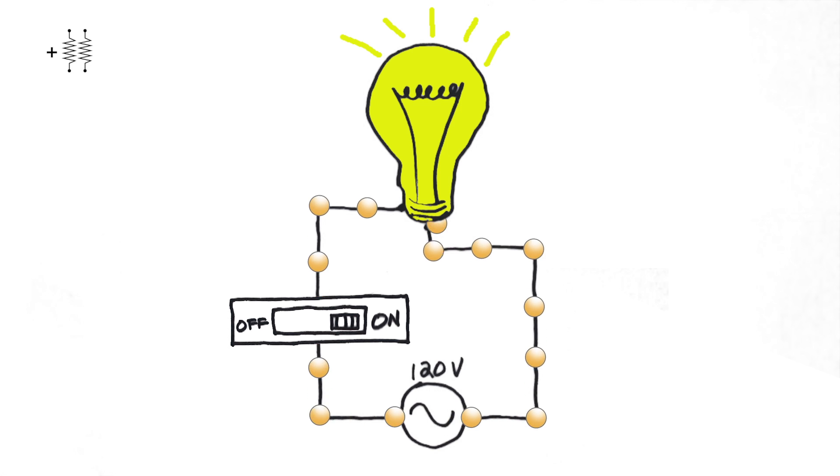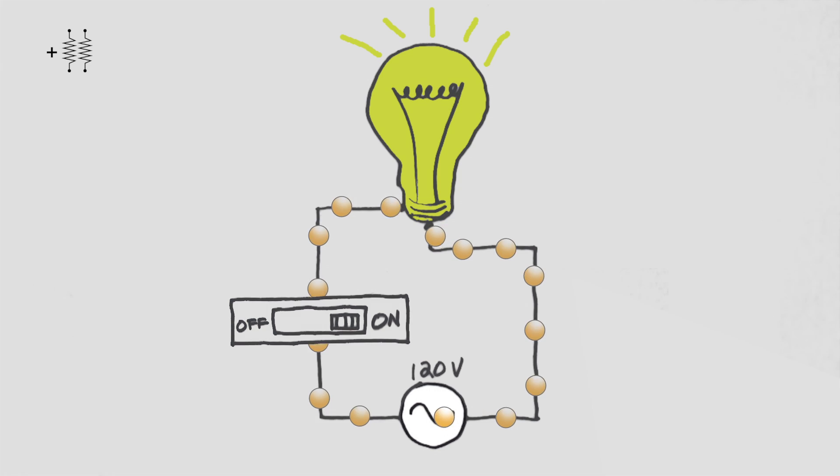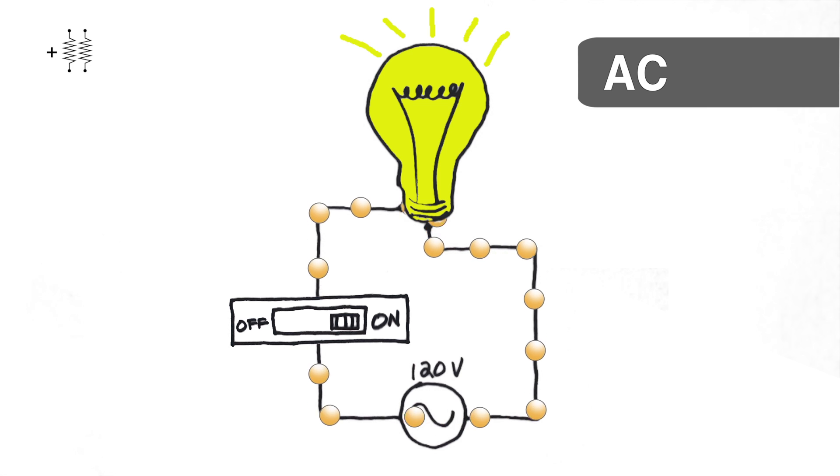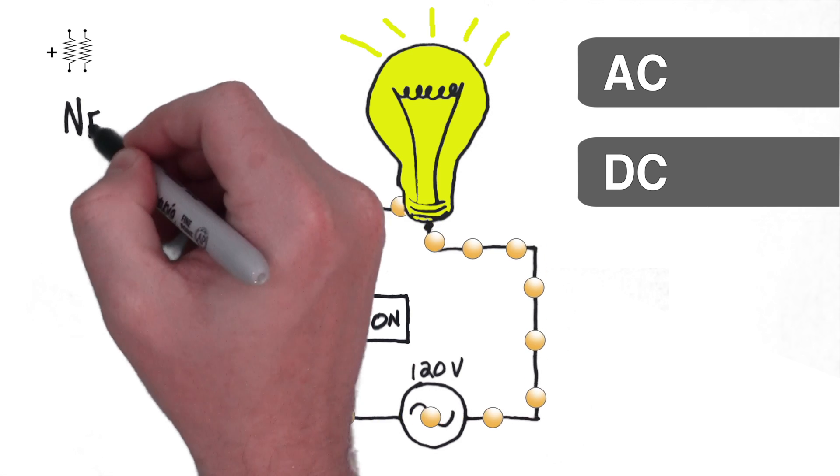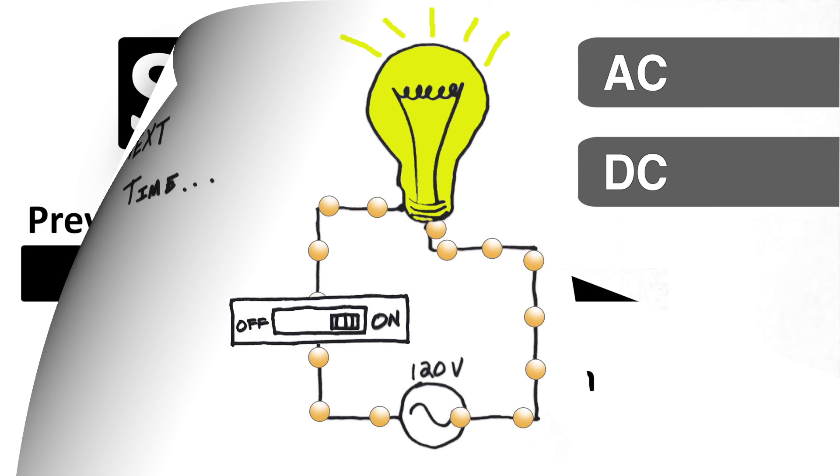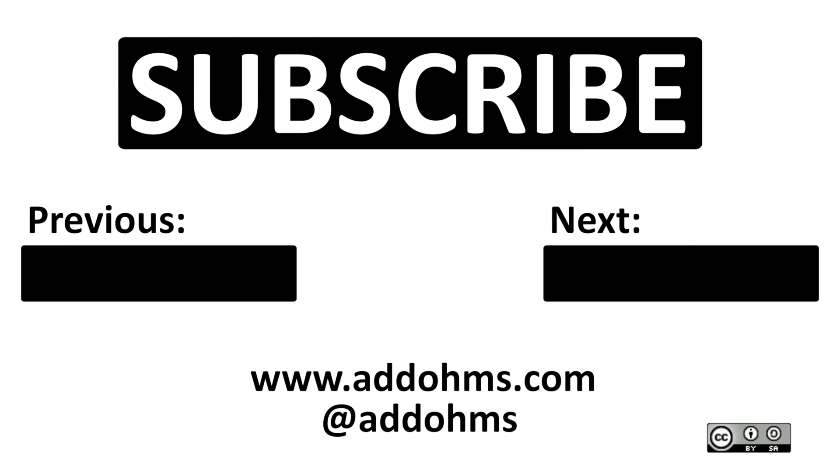Let's go back to the light bulb animation real quick, because I need to make a clarification. You might remember that this symbol is actually the symbol for an AC power supply, but the way that the current is animated, it's as if it were DC. So, in the next video, we're going to talk about the difference between DC and AC.